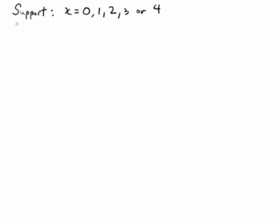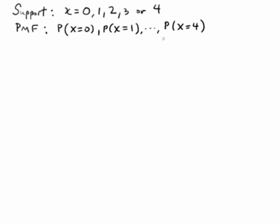So what we need to do in order to find the PMF is we need to find the probability that x is zero, probability that x is one, out to the probability that x is four. If we can find all of those probabilities, then we've defined the probability mass function.